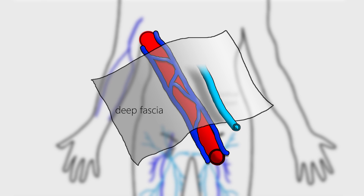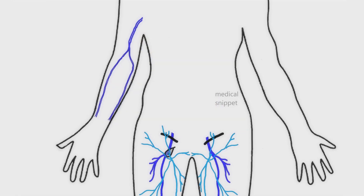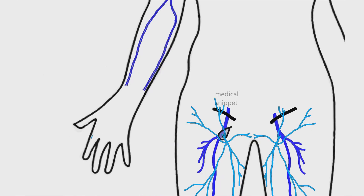Superficial veins run along the subcutaneous tissue, superficial to the fascia. They course away from the pressure points. So superficial veins are absent in the palm, ulnar border of the forearm, and in the back of the arm. The major superficial veins in the upper limb are the basilic and cephalic veins.